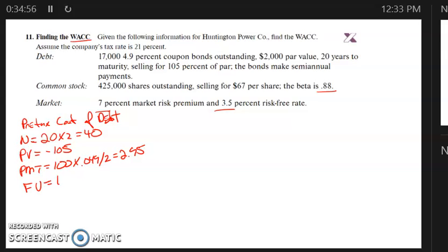Future value is 100. Compute I/Y is 2.26. That's the semiannual rate, so multiply by 2 to annualize it and you get 4.52%.